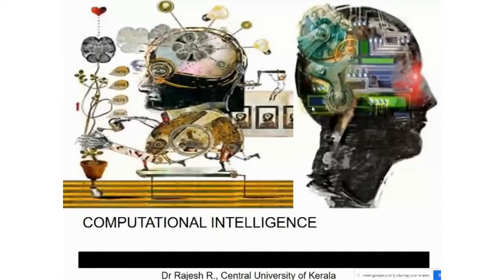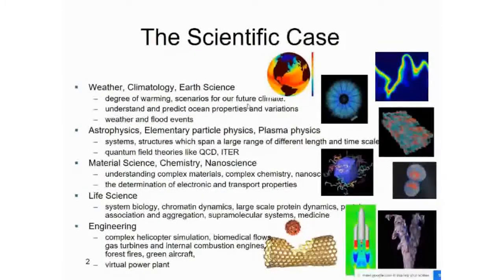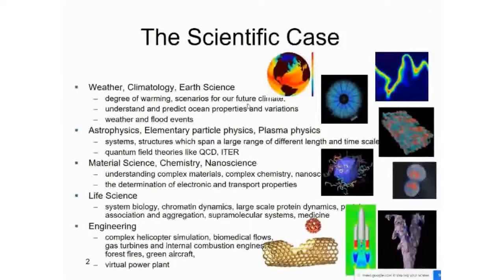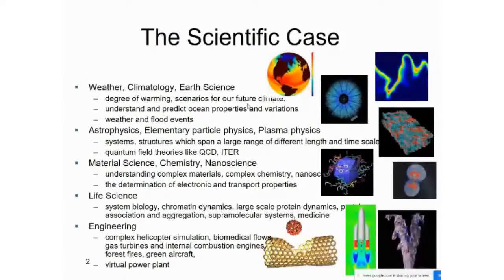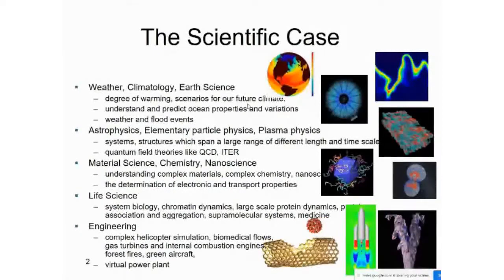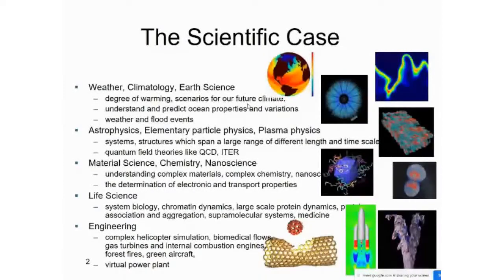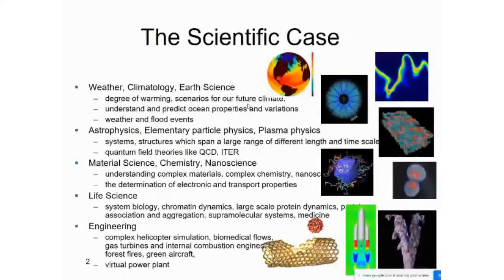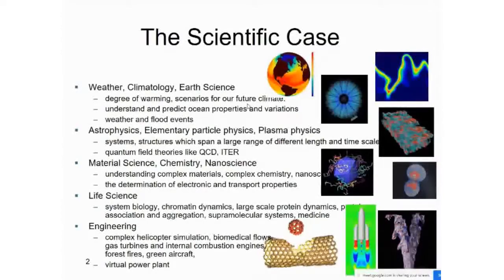We have to understand the real need and necessity of computational intelligence. We have several applications — starting from weather, climatology, earth science, astrophysics, particle physics, plasma physics, material science, chemistry, nanoscience, life science, and engineering. Everywhere there are computational applications, and we also need computational intelligence because the problems we face there are so complex.